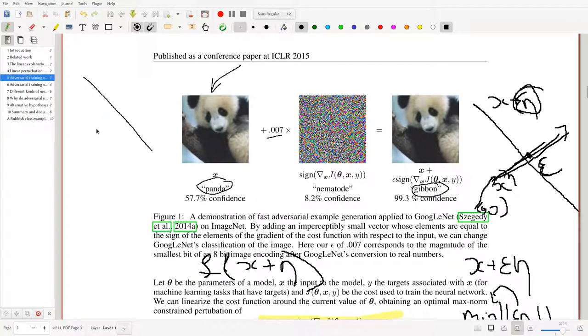If we look at it from a geometric perspective, this is your point x—these are pandas and these are gibbons. What we want to do is first find the sign of the gradient of the loss function, this formula here: sign(∇x J(θ, x, y)). Then we ride along it by some factor epsilon times this original vector.